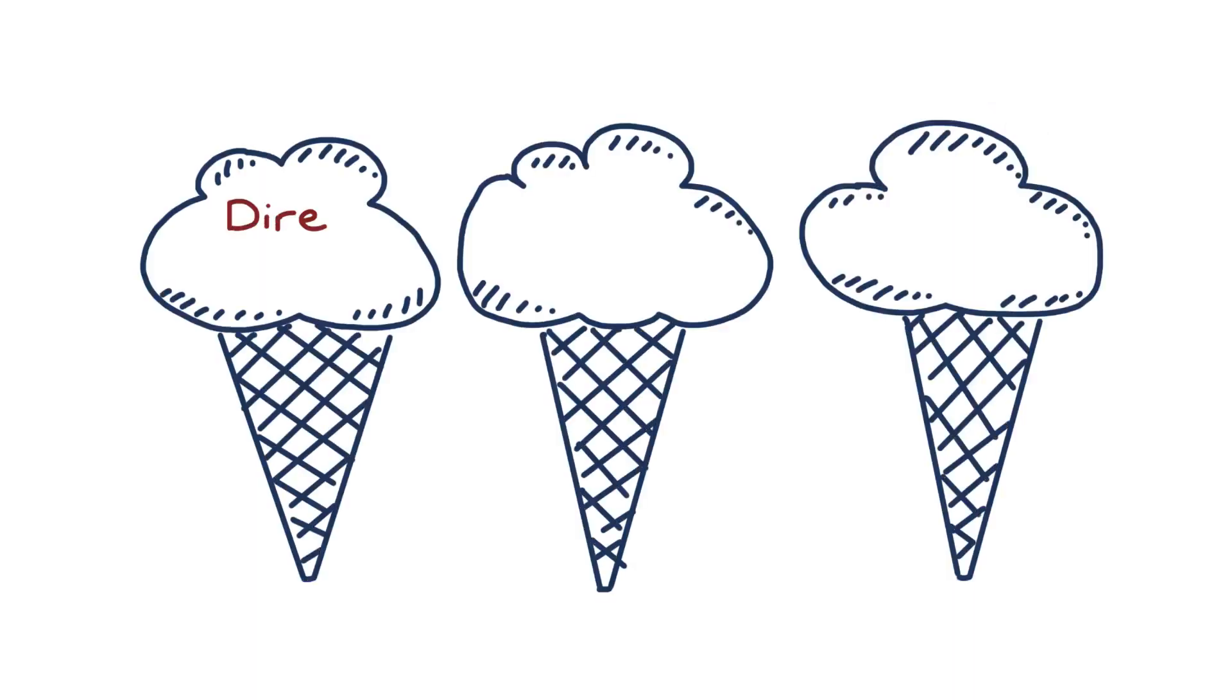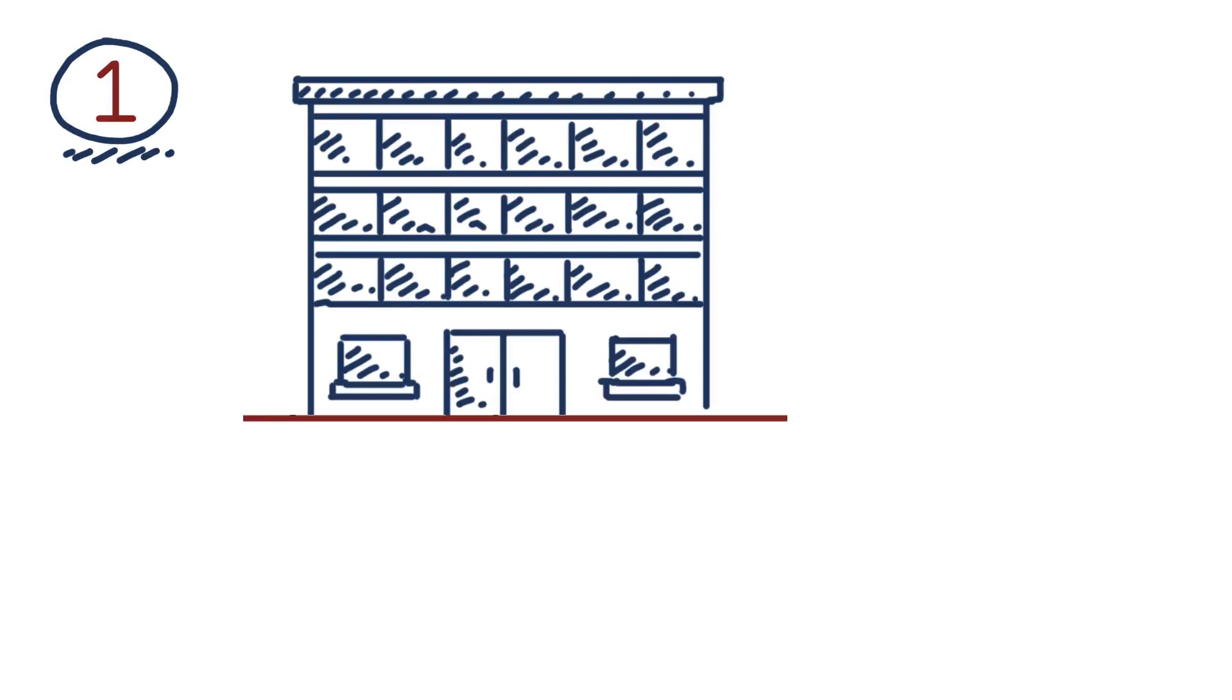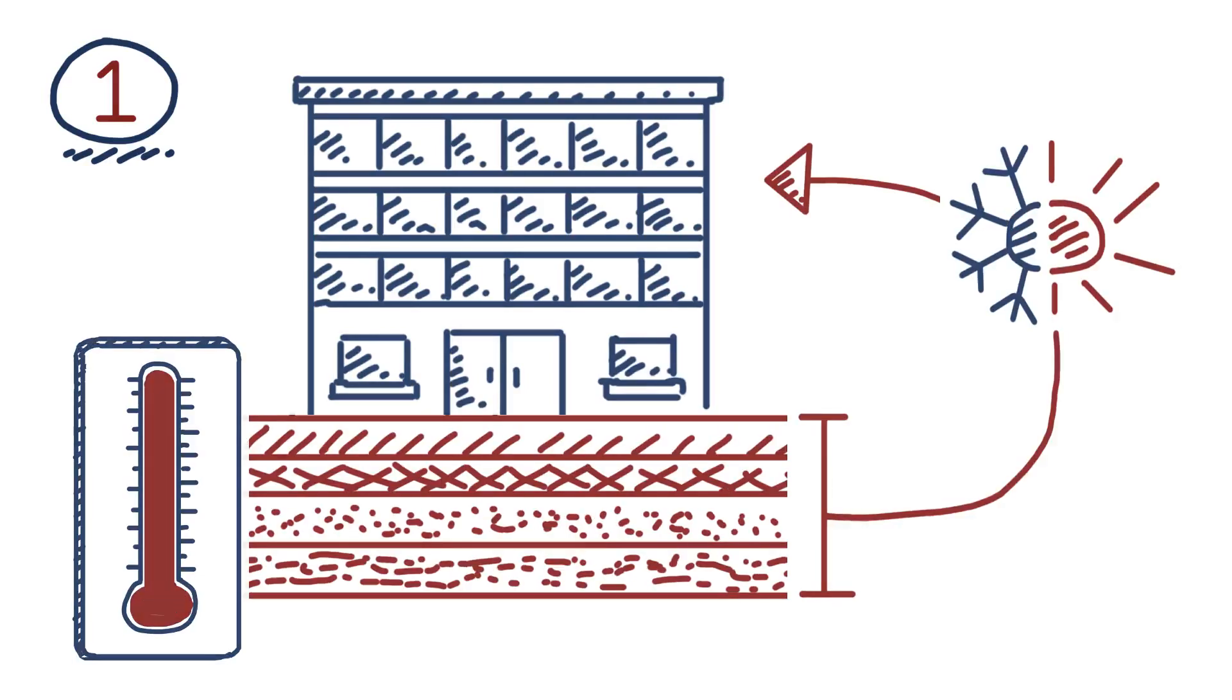Geothermal generally comes in three flavors. Direct use, conventional hydrothermal, and advanced geothermal. The first, direct geothermal energy, uses the difference between the surface and underground temperatures to heat and cool buildings.